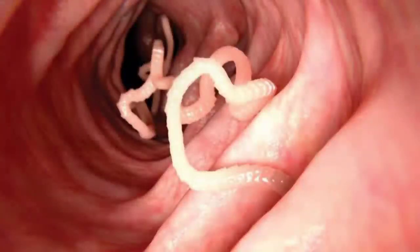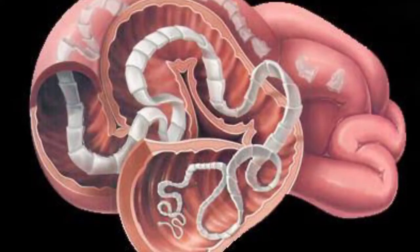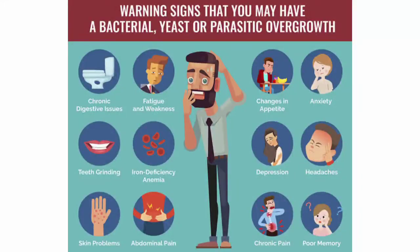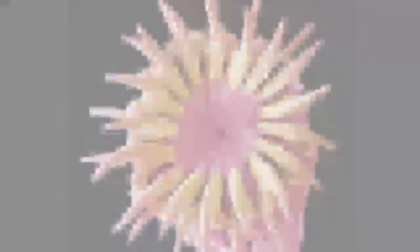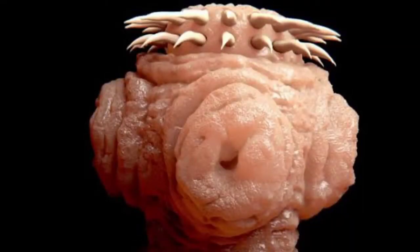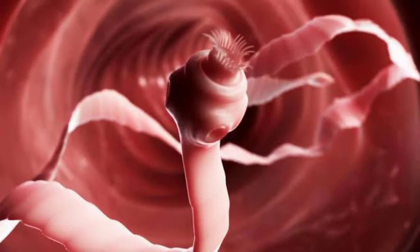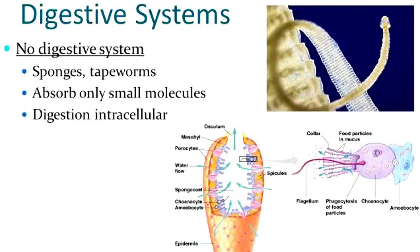Parasites over the years have evolved and developed certain adaptations to survive within or outside the host's body. For example: first, they lose unnecessary sense organs, since they are depending entirely on the host for survival. Second, they develop certain adhesive organs like hookers and suckers which help them bind to the substratum on which they are feeding. Third, they lose their digestive system since most of the food taken in by them is already digested food. And fourth, they have a very high reproductive capacity which helps them multiply in exponential manners so as to maintain their population within the host.